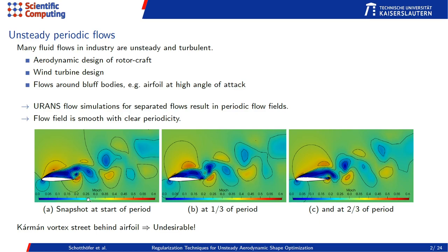You can see at the first snapshot, at the start of a period, the Kármán vortex street visible behind the airfoil. Here we see the flow at one third of a period and here at two thirds of a period. You can observe that the flow field is smooth and has a clear periodicity, and we are going to use this periodicity for our optimization endeavor.